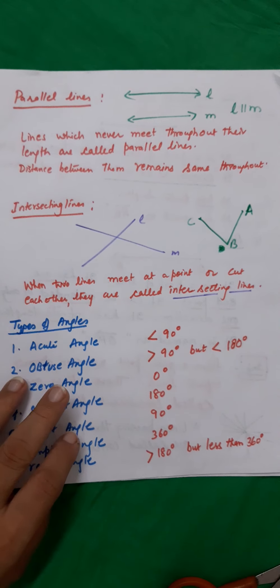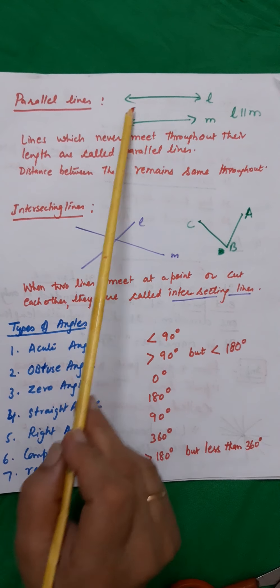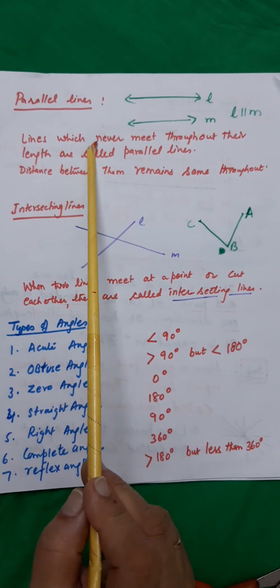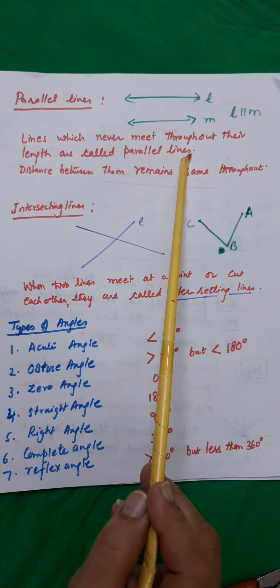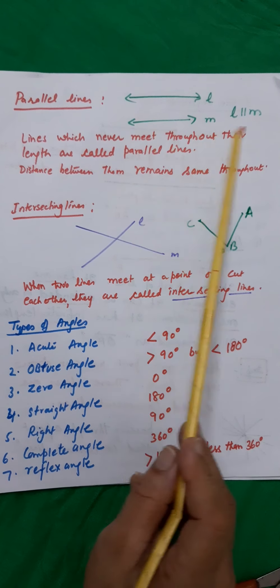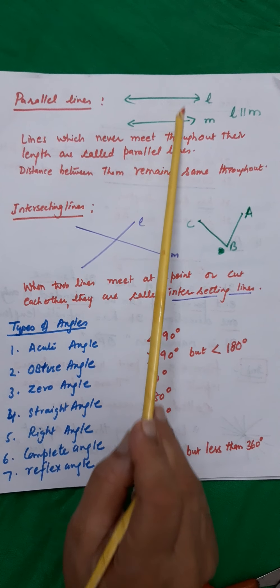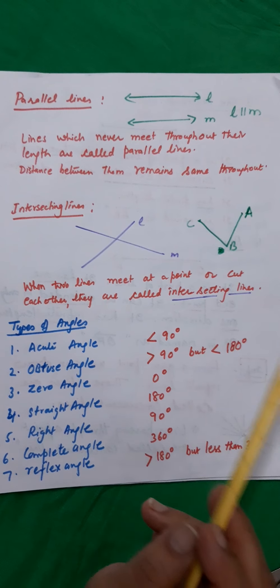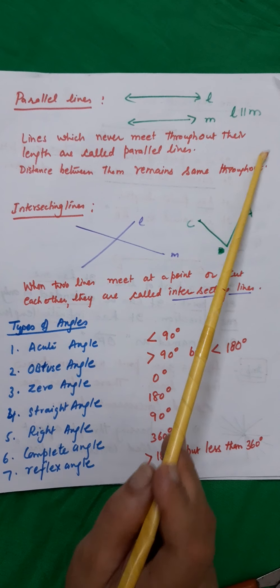Now we move on to parallel lines. What are parallel lines? You can see here I have drawn two lines, L and M. The lines which will never meet throughout their length are called parallel lines. The distance between them remains the same throughout their length. These kinds of lines are called parallel lines.